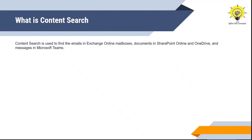By definition, Content Search is a tool in Microsoft 365 Compliance Center used to find emails in Exchange Online mailboxes. You can use it to search documents in SharePoint Online or OneDrive, and you can find messages in Microsoft Teams. Content Search and eDiscovery are both used to perform searches and download results in PST files, but the difference is that eDiscovery gives an option to place contents on hold, whereas Content Search doesn't have this option.